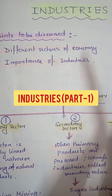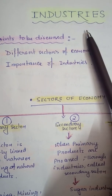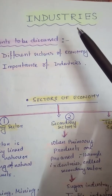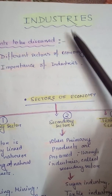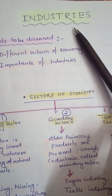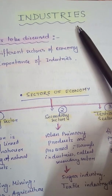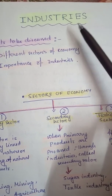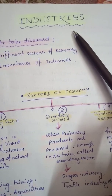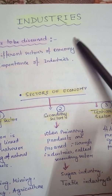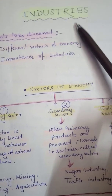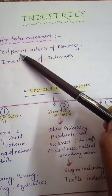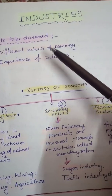Good morning, children. Today we are going to start a new chapter on Industries. First, we need to understand the meaning of industry. The word 'industry' creates an image of factories and mills, from which we get different products. The process of transformation of natural resources into finished, ready-to-use products by utilizing the full potential of those resources is called manufacturing. This manufacturing and processing happens in industries. Today we will discuss different sectors of the economy and the importance of industries.